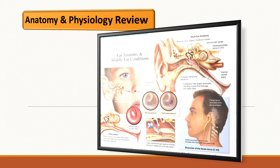Hearing occurs when sound is delivered through the air to the external ear canal and the temporal bone covering of the mastoid air cells. The sound waves create vibrations which are ultimately transmitted to the cochlea, which changes the vibrations into action potentials that are conducted to the brain. The nerve impulses that are processed and interpreted by the brain come from the sound.